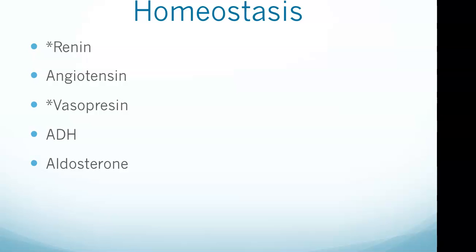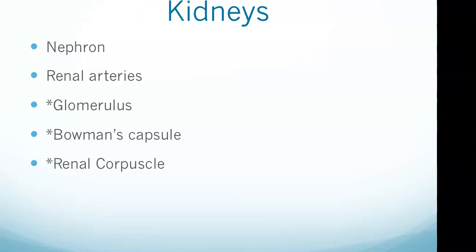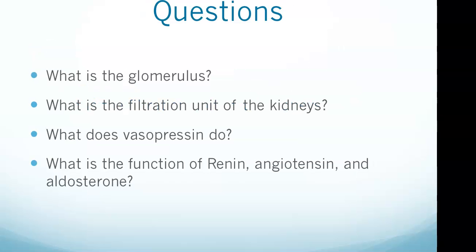Aldosterone increases the reabsorption of sodium from the renal tubules, causing more water to be reabsorbed via osmosis. The trigger for aldosterone is both decreased blood pressure and increased potassium levels. The vasopressin question asks: What does vasopressin do? Your main answer is that it prevents fluid loss to maintain blood volume.